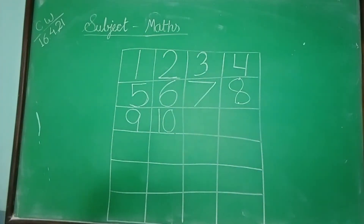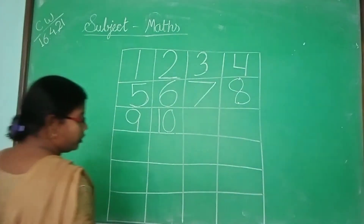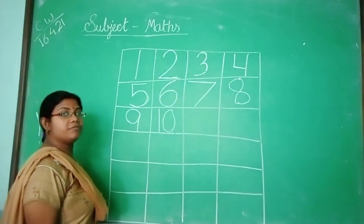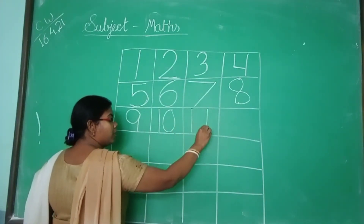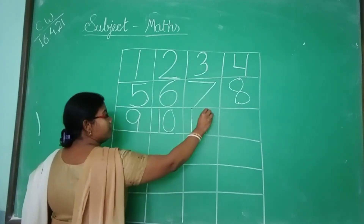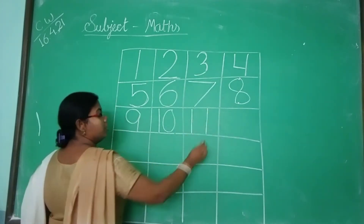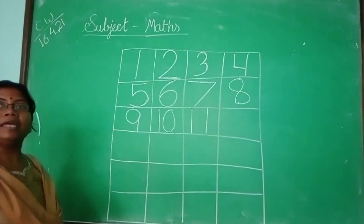Then we will do something new. Till 1 through 10 we have covered. From Monday I am going to start 11, 12. How you will write 11? It is very easy — two standing lines become 11.